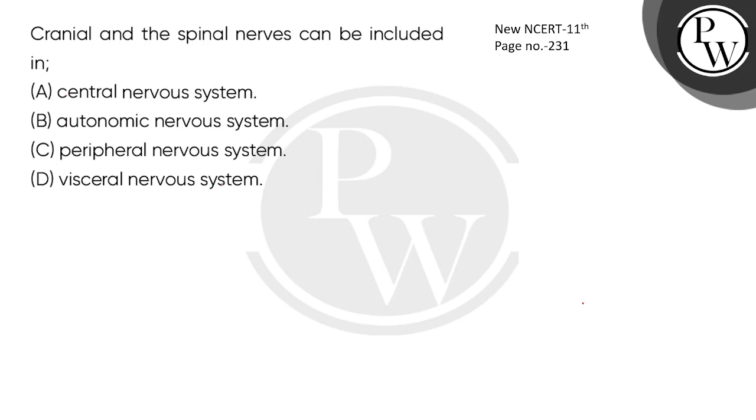So when you learn nervous system, who has divided the nervous system? The nervous system is divided into two parts. Who are those two parts?